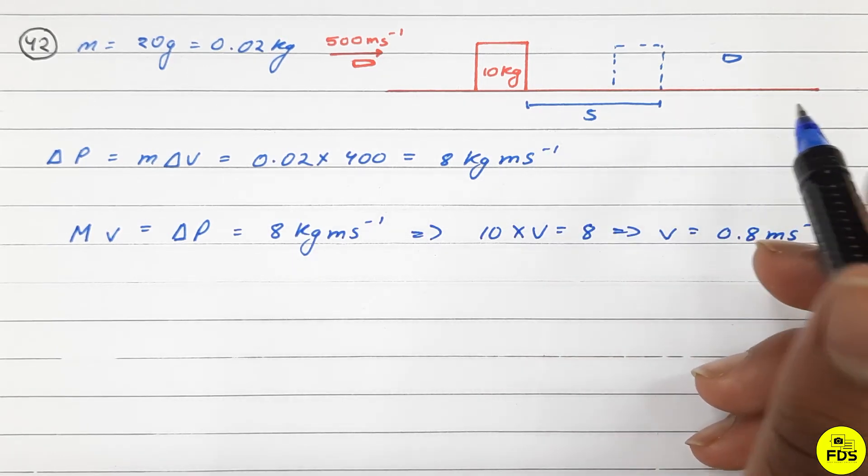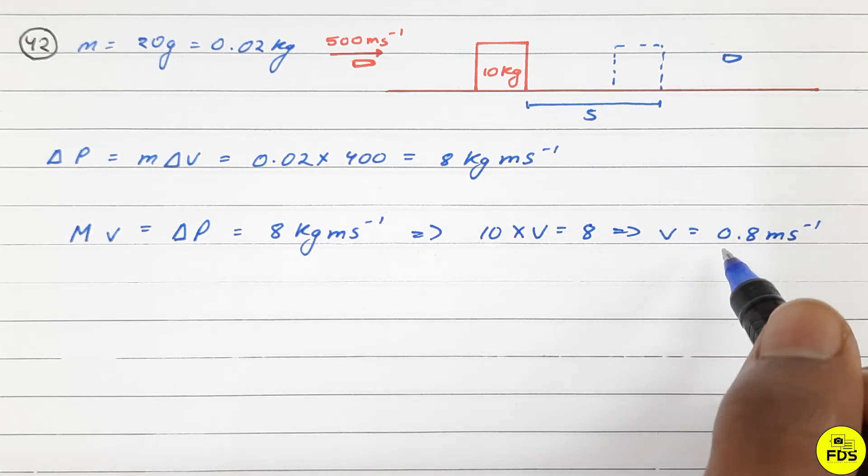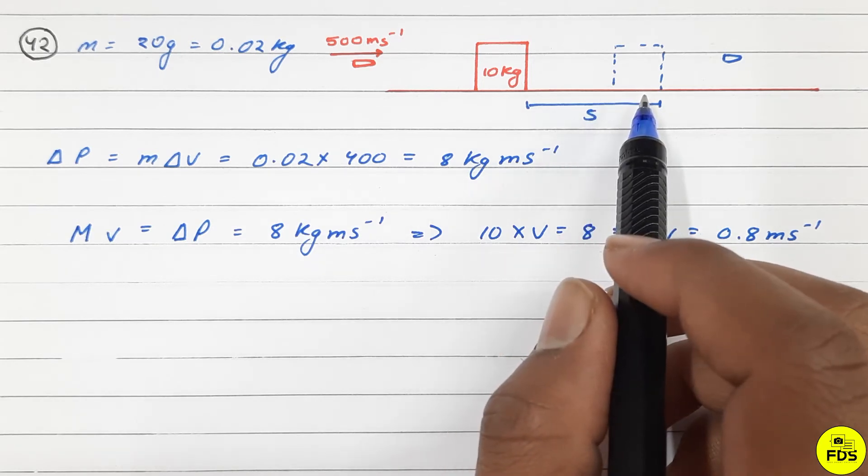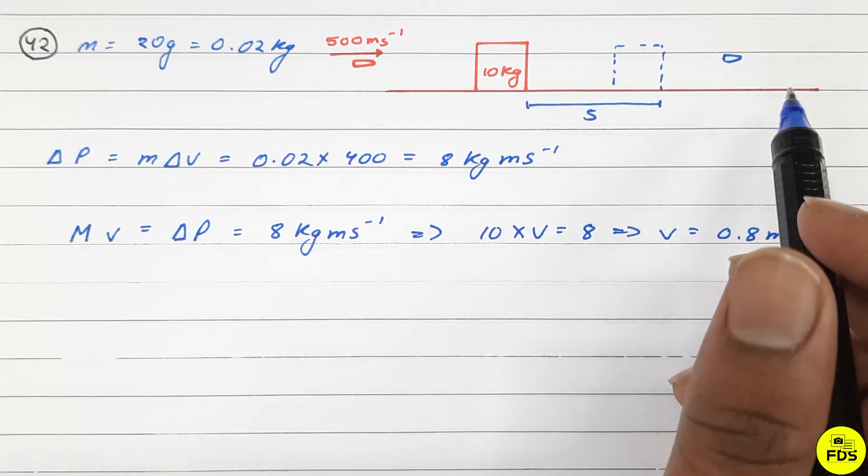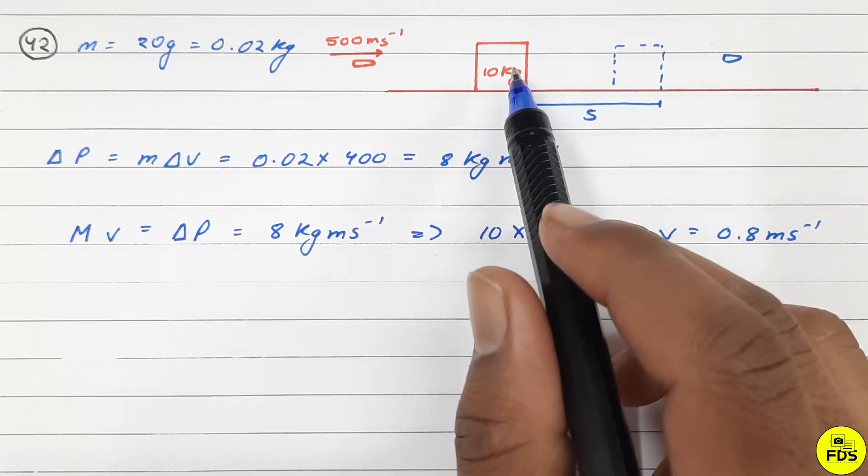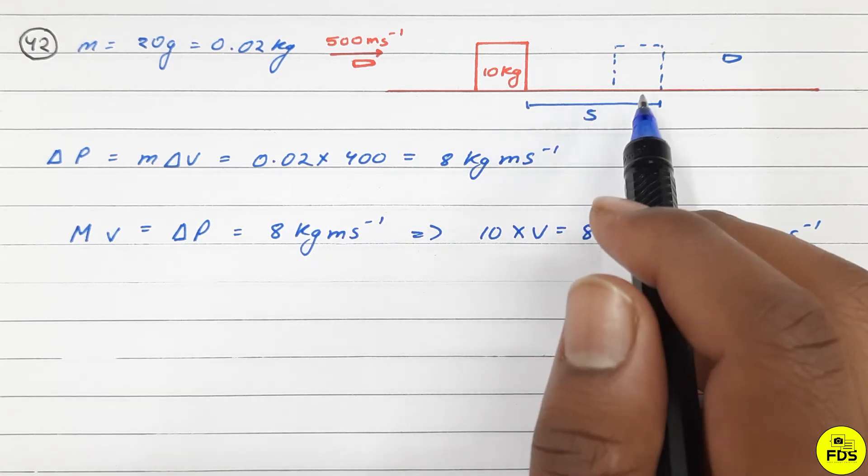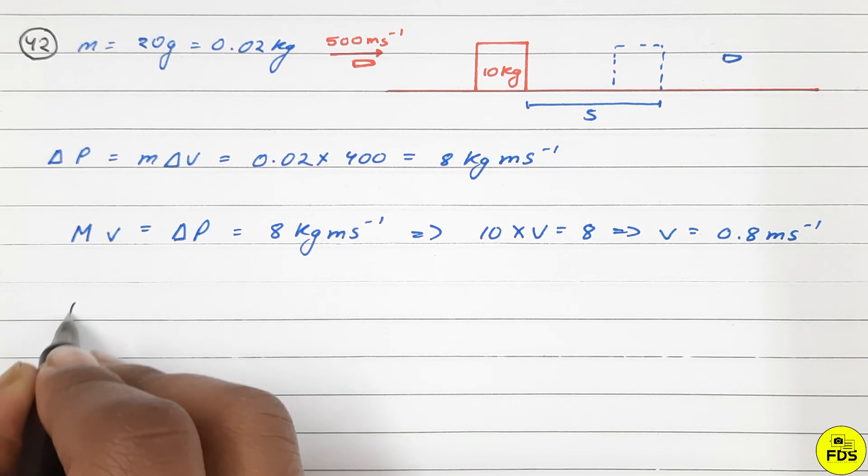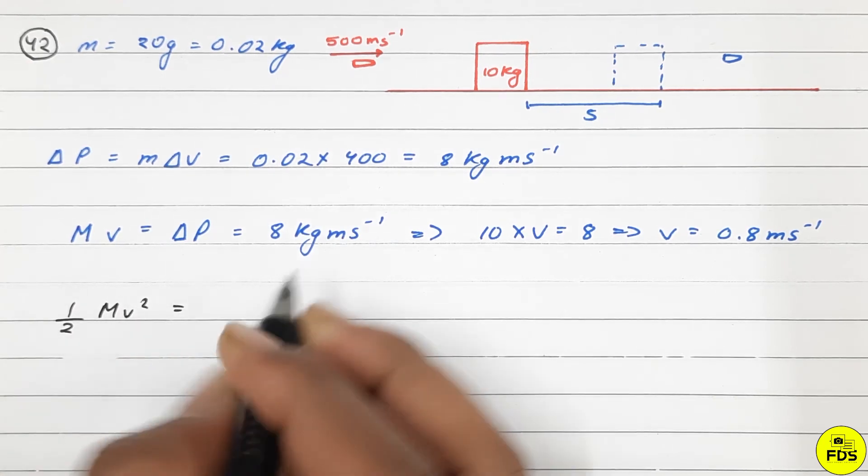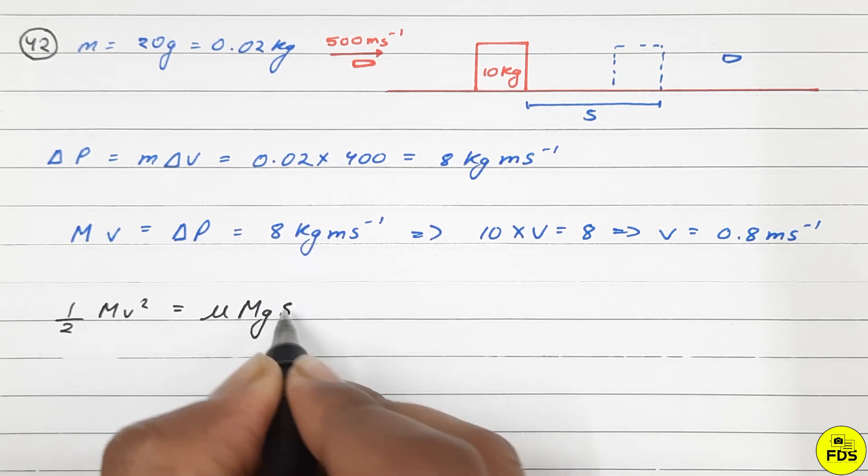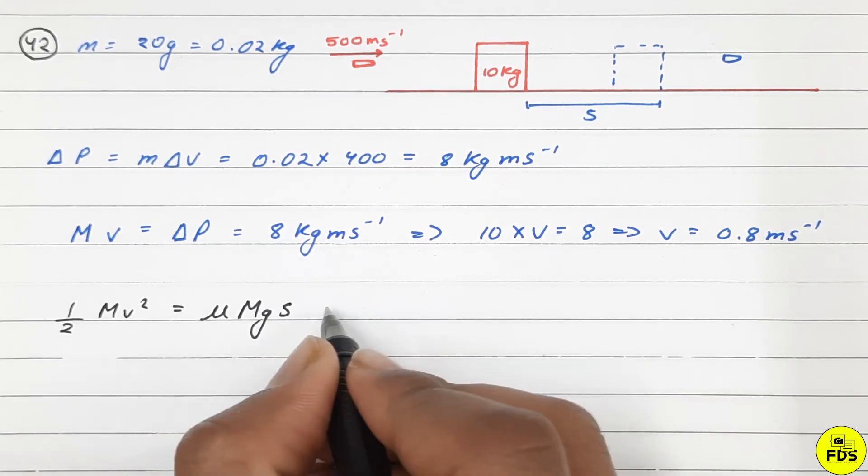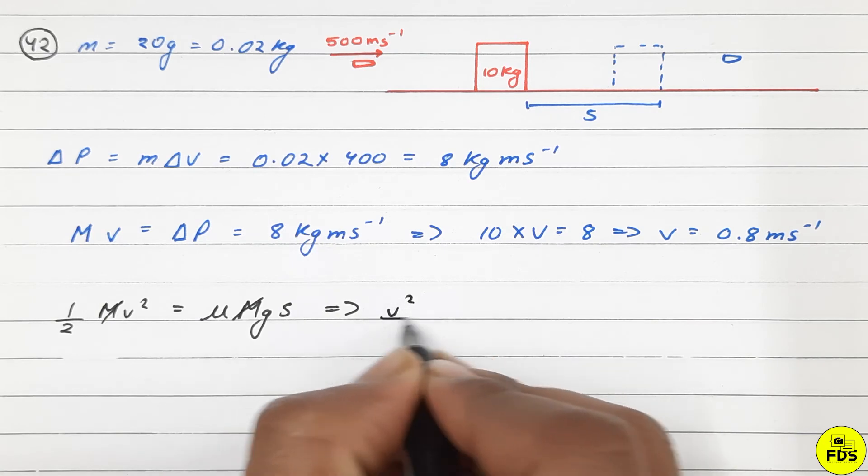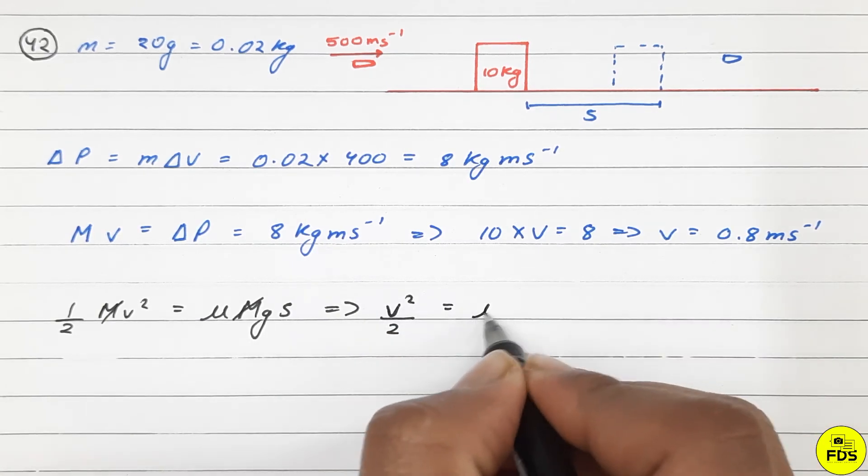Now for the block: it starts with this velocity and finally comes to rest due to friction. The kinetic energy at the start is dissipated by friction. So one-half mv squared equals μ times mgs, where μ is the friction coefficient.